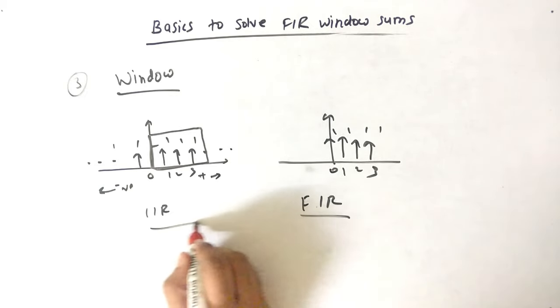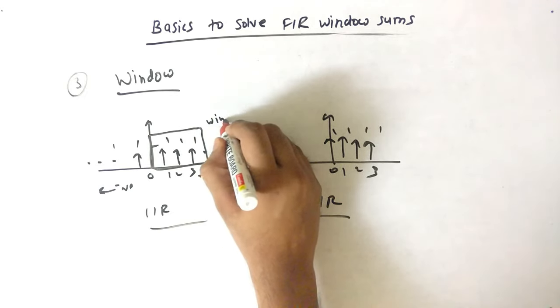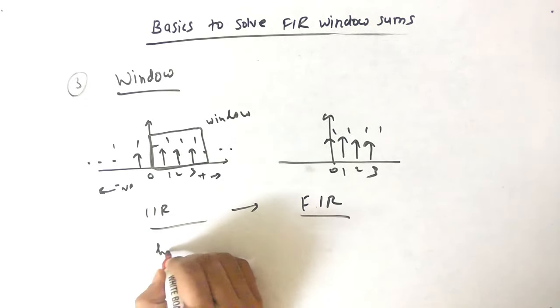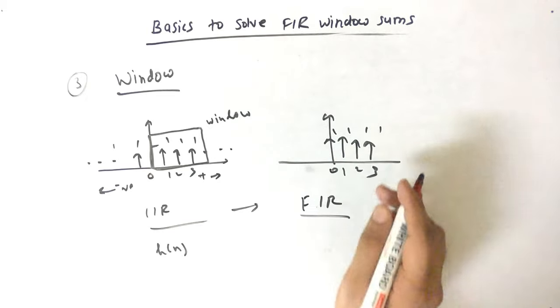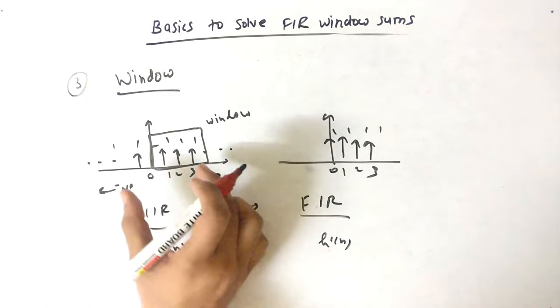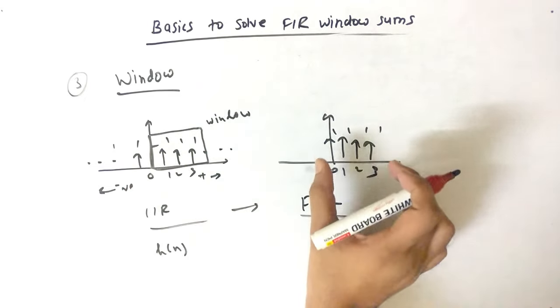Using the window, we can take one portion of H of N and we can plot it.